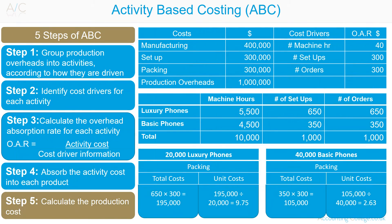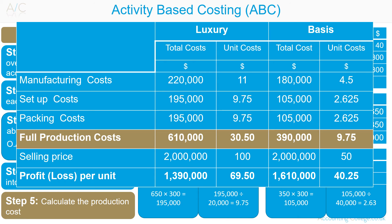Step 5: Calculate the production cost. In an exam situation you would be calculating either the total or the unit cost, not both — both are shown here for illustration purposes only. You can check your figures: the total full production cost of luxury phones is $610,000 and basic phones is $390,000, giving $1,000,000 — which equals the original total production overhead costs.